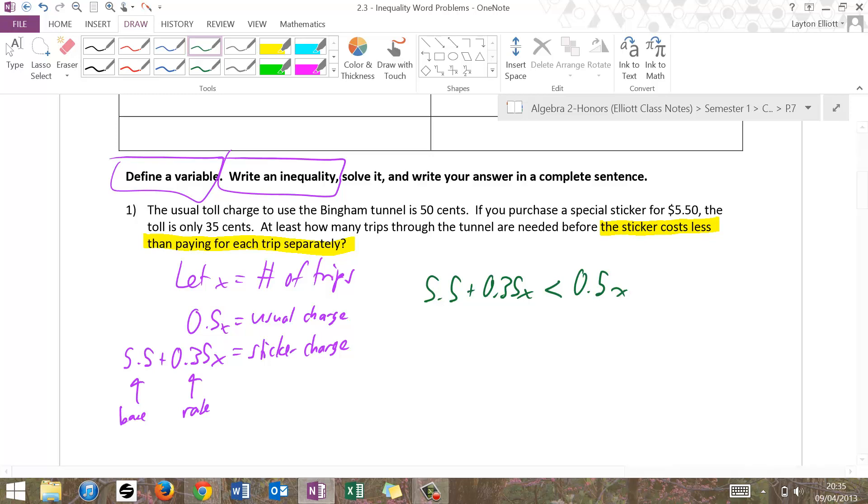That's the inequality that we build. Now let's go ahead and solve that one. So subtract 0.35, and I get 5.5 is less than 0.15x. Divide both sides by 0.15, and I get x is greater than, that actually becomes 550 over 15, which reduces to 110 over 3, which then becomes in decimal form 36.6 repeating.